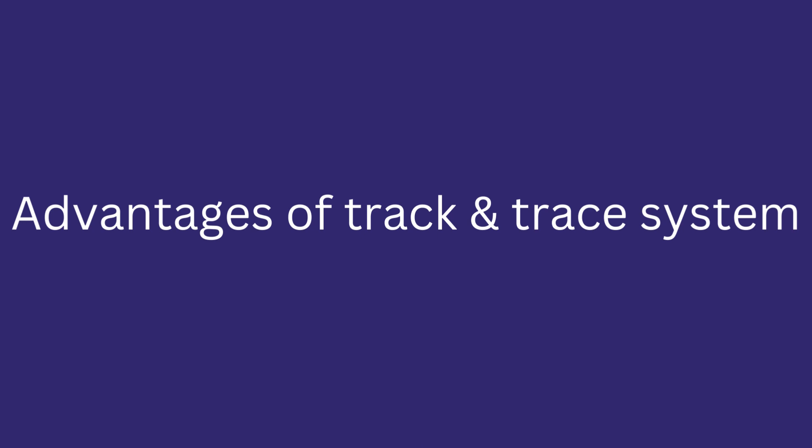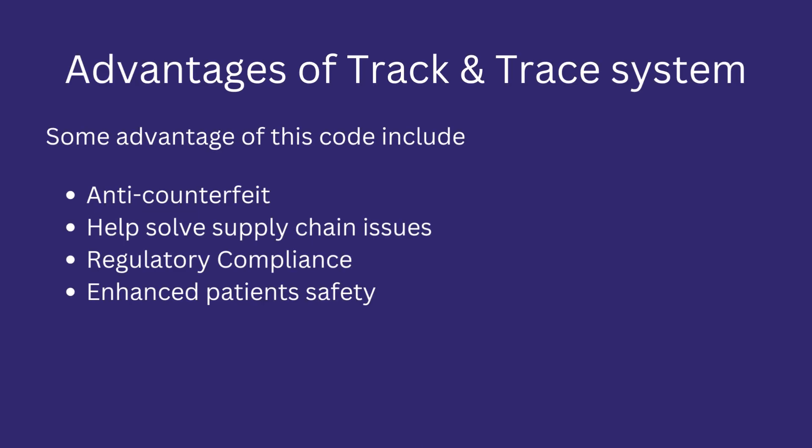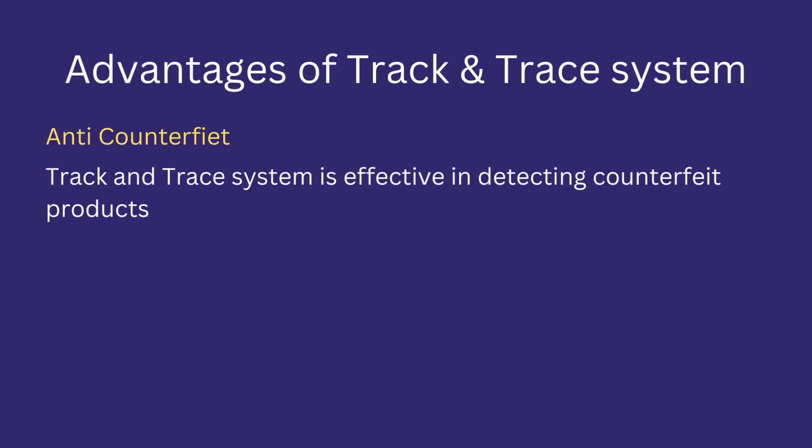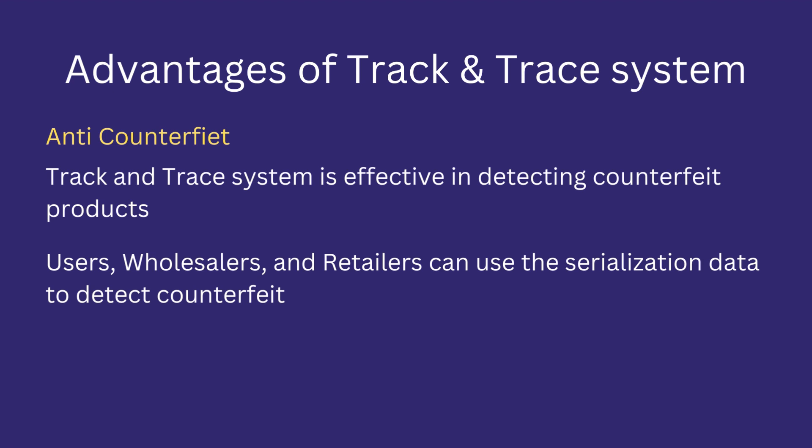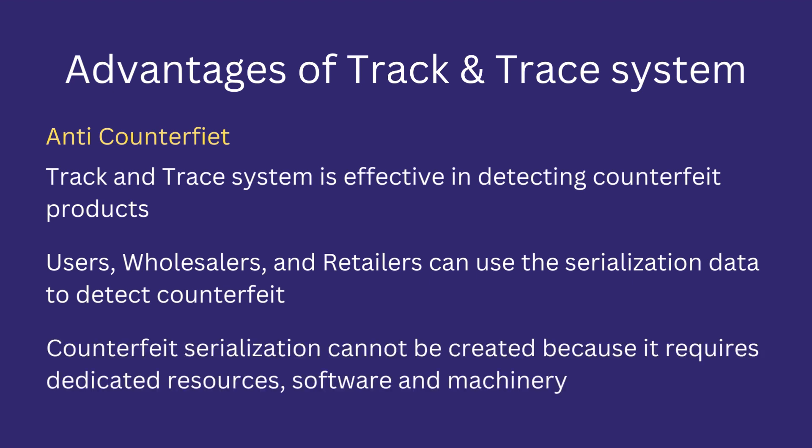Advantages of track and trace system include: anti-counterfeit, resolving supply chain issues, regulatory compliance, and enhanced patient safety. Anti-counterfeit: the track and trace system is effective in detecting counterfeit products. Users, wholesalers, and retailers can use the serialization data to detect counterfeits. The main reason is that counterfeit serialization cannot be created because it requires dedicated resources, software, and machinery, which is difficult for counterfeiters to install and update at their locations.